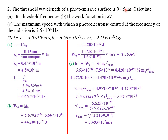The SI unit for length is the meter, so we convert: 0.45 μm ÷ 10⁶ μm/m = 0.45 × 10⁻⁶ m = 4.5 × 10⁻⁷ m. That is our threshold wavelength expressed in SI units and in standard form.